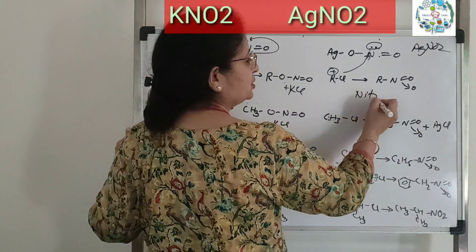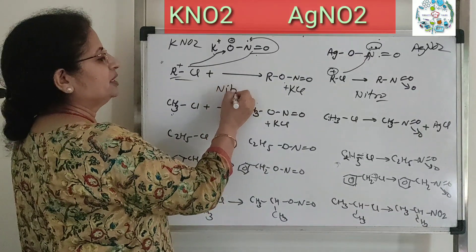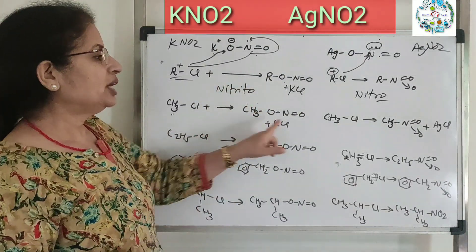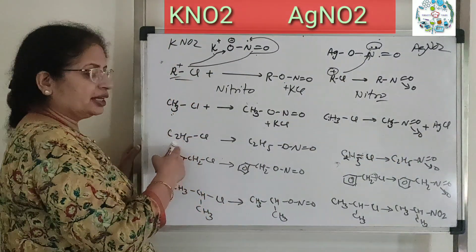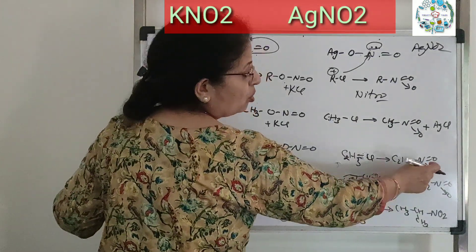This is the basic difference - the product is nitroalkane with AgNO2, whereas with KNO2 the product is nitritoalkane. If you take methyl, you get nitromethane with AgNO2. If ethyl, then nitritoethane with KNO2, and nitroethane with AgNO2.